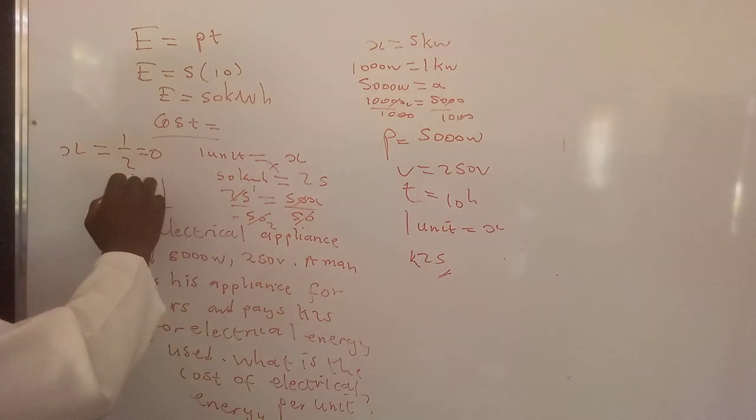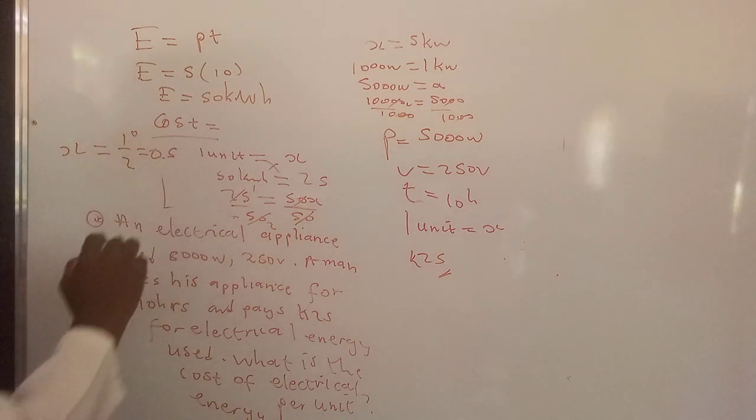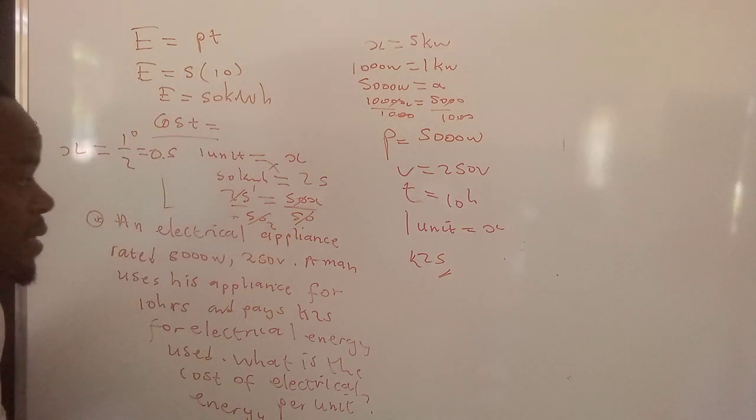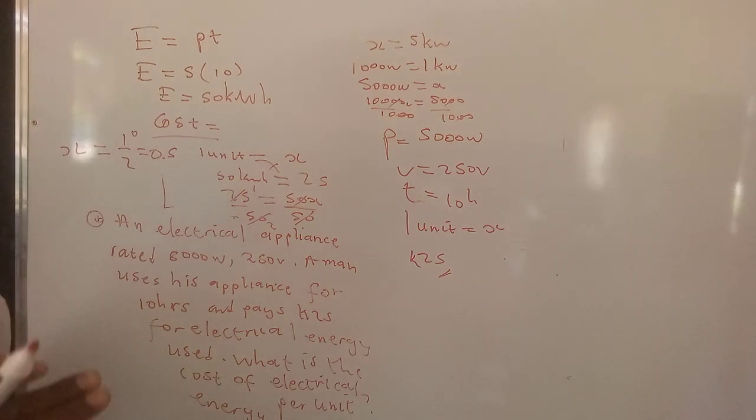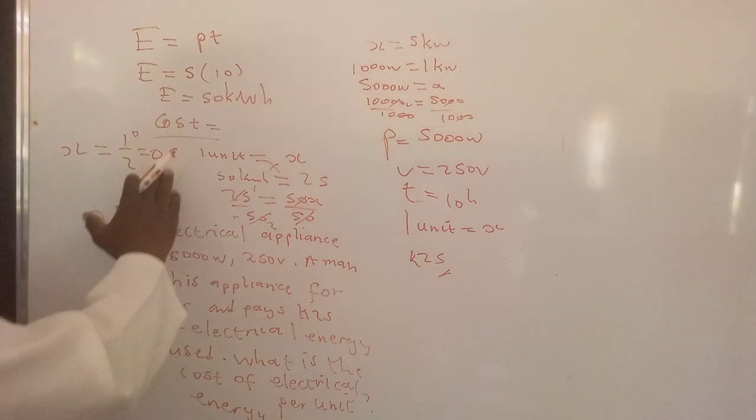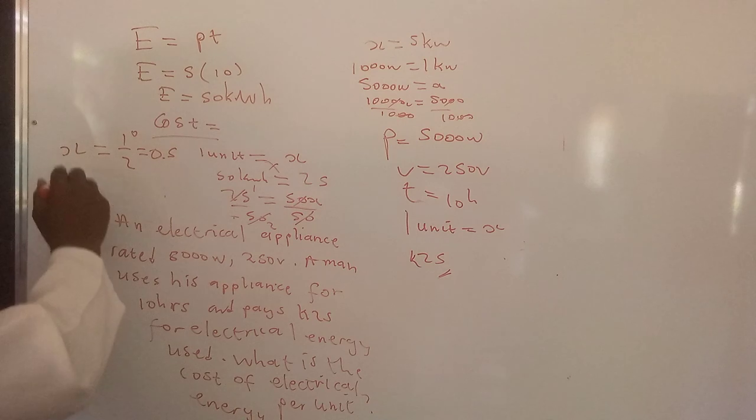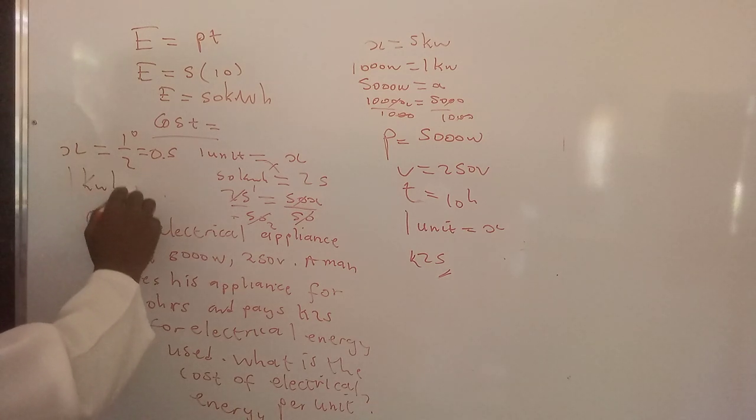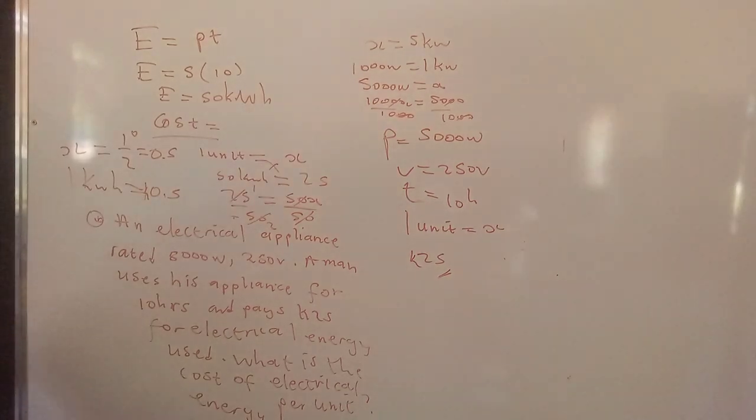We add a 0 there. 2 into 10, that's 5. So what we have actually determined is the value of 1 kilowatt per hour of energy. We can say 1 kilowatt per hour of energy equates to 0.5, so that's 5 ngwee.